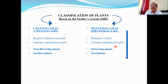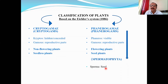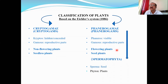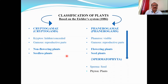Since phanerogams produce seeds, they are also called Spermatophyta. 'Sperma' is a Greek word meaning seed, and 'phyton' means plant. So spermatophyta are seed plants — flowering plants that bear seeds — whereas cryptogams are non-flowering and seedless plants.